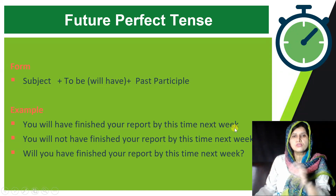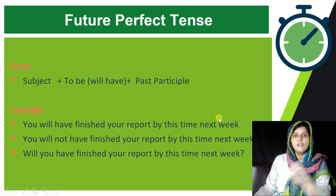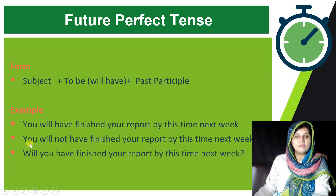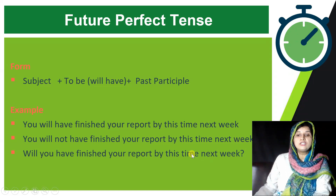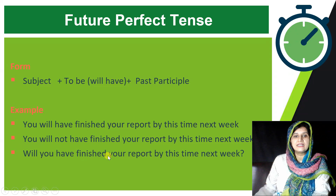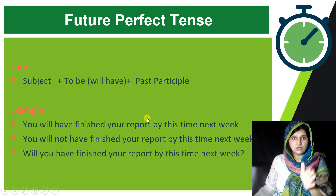Most of the time we use a time marker with Future Perfect Tense. In negative sentences, we only need to add 'not' after 'will': 'You will not have finished your report by this time next week.' In interrogative sentences, 'will' comes at the start, then the subject, then 'have,' then the past participle: 'Will you have finished your report by this time next week?'